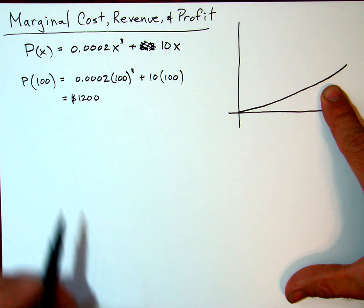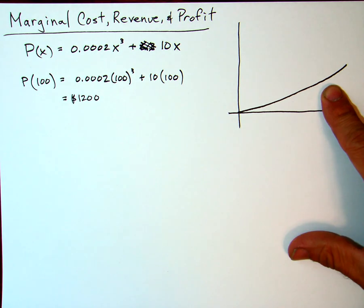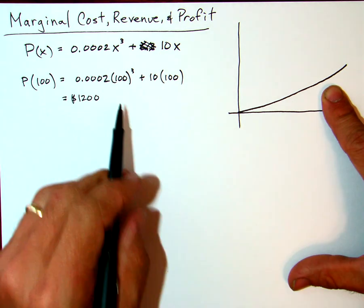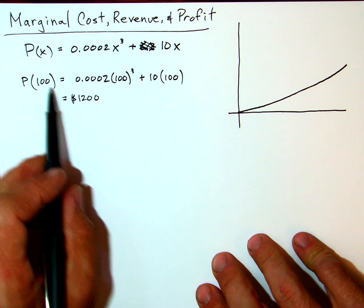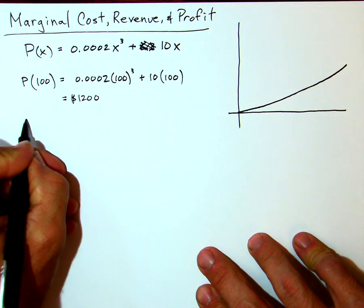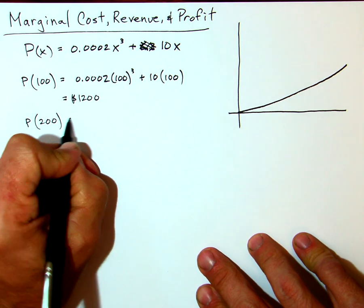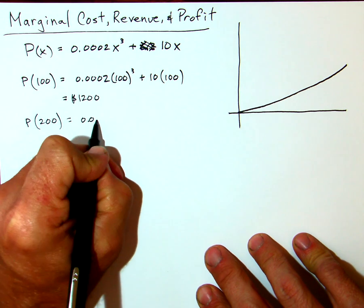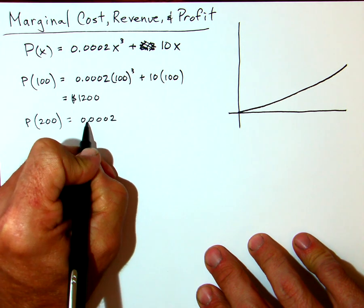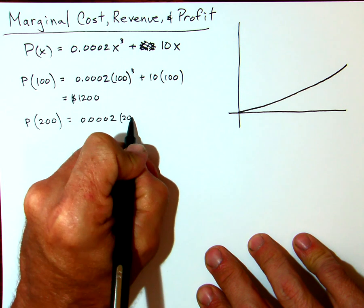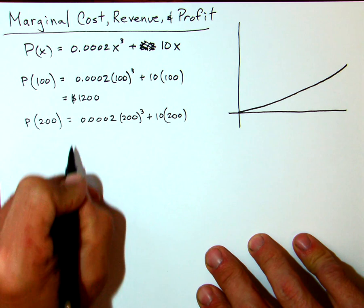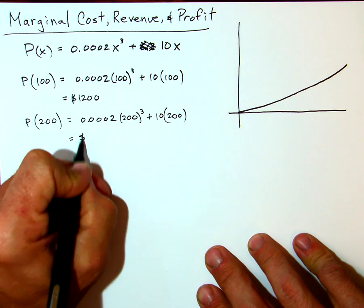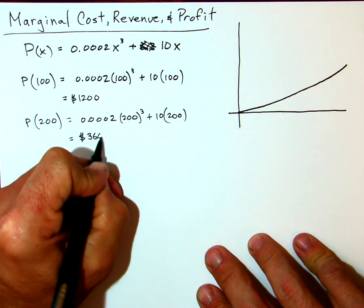In addition, the profit for selling, for example, 100 bicycles—the profit for the 101st bicycle is going to be more than the profit for the 100th bicycle. One way to see this is let's look at the profit for 200 bicycles. We'll put in 0.0002 × 200³ + 10 × 200, and that would give us a profit of $3,600.